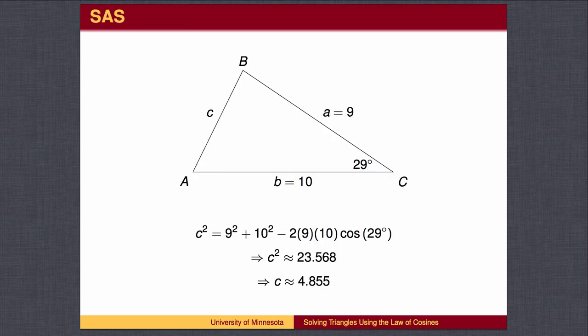Given two sides and the included angle of any triangle, you can find the third side using the Law of Cosines. Here's an example.